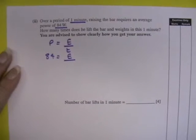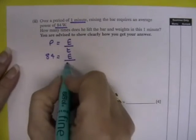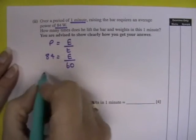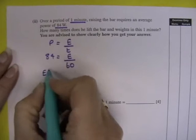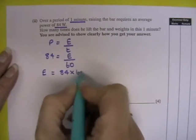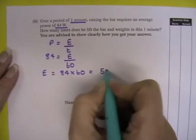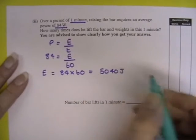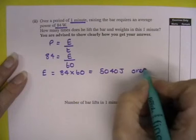84 watts equals the energy divided by 1 minute. Now 1 minute, the unit minute is not an SI unit, therefore we must convert it to seconds. So 1 minute is 60 seconds. So the energy over a minute is 84 times 60, which is 5040 joules of energy over the 1 minute.